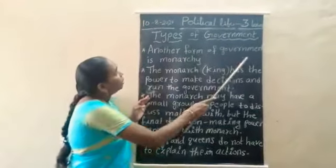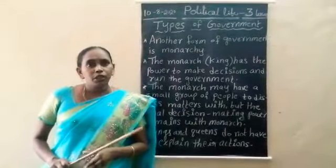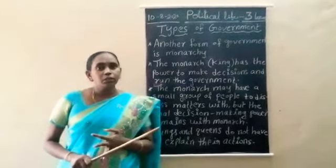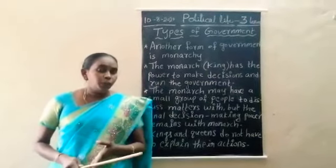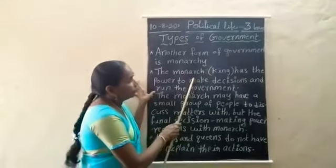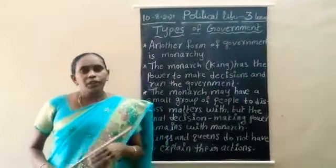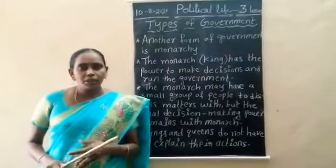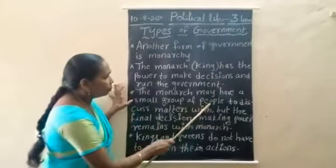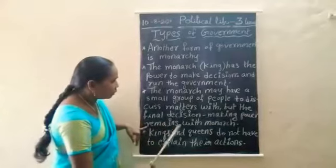The second form of government is monarchy. Monarchy means the king's rule — the king or queen rules the kingdom. For example, Lord Ashoka, the Delhi Sultans, Mughal Emperors, Chalukyas, and many kings ruled important places. The monarch has the power to make decisions and run the government. The king or queen may have a small group of people to discuss matters, but the final decision-making power remains with the monarch only.